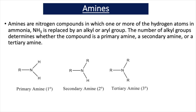Primary amines have one alkyl group attached to the nitrogen and two hydrogens. A secondary amine has two of the hydrogens on an ammonia molecule replaced by alkyl groups. And a tertiary amine has three alkyl groups attached to the nitrogen.